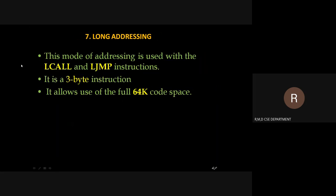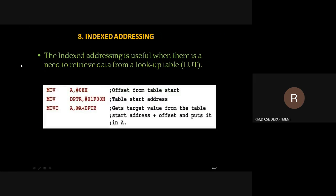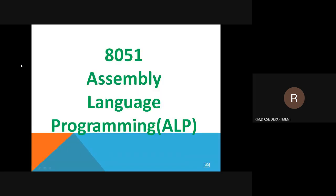Long addressing mode is used with the LCALL and LJMP instructions. Normally it is a 3-byte instruction which allows for the full 64K code space. The last type is the indexed addressing mode — the index takes the offset value and we calculate the effective address from a lookup table, adding that value accordingly. Thank you.